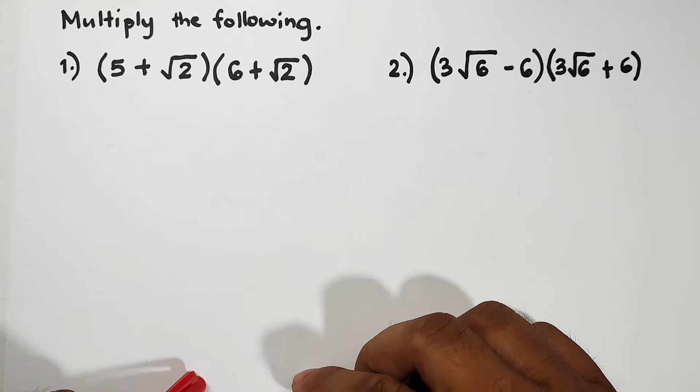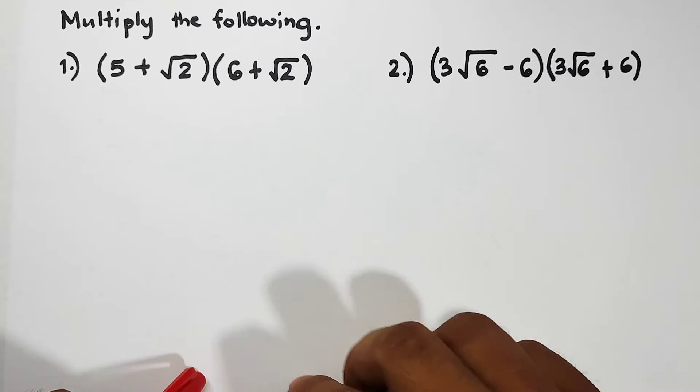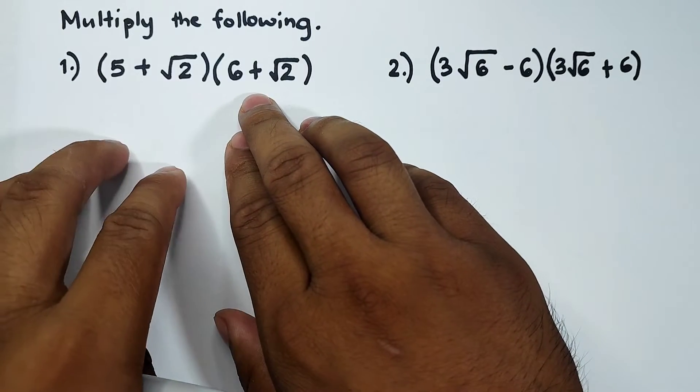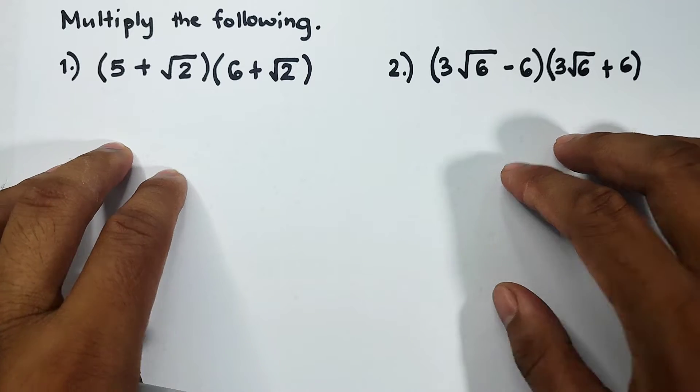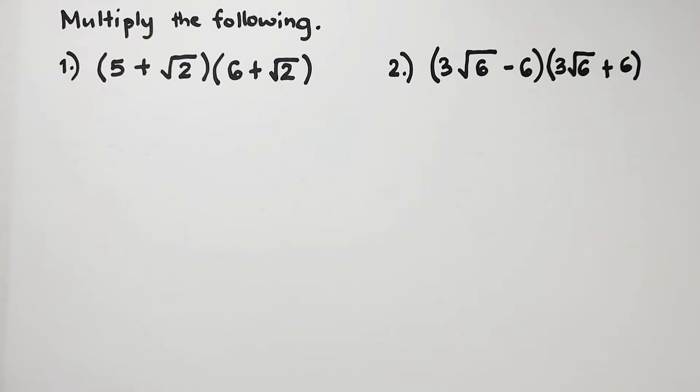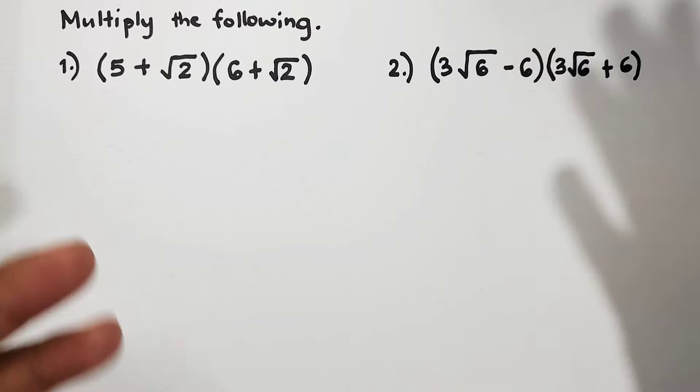Basically, what are the skills you need before you dive into this topic? You should already know how to use FOIL method since the two examples are both binomials, and also if there's a pattern we can use like difference of two squares.